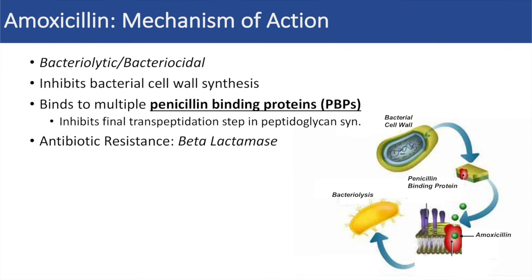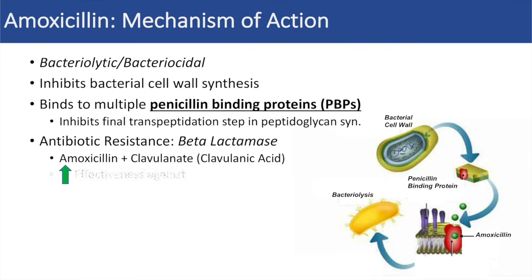Now, one of the major problems with the beta-lactam antibiotics is the development of antibiotic resistance. Bacteria have developed an enzyme known as beta-lactamase, which can actually break down the antibiotic — it'll break down the beta-lactam ring of the antibiotic, making it ineffective. We can get around this by supplementing the antibiotic with another agent. In this case, we utilize clavulanate or clavulanic acid and mix this with amoxicillin — you might have heard of amoxiclav. This increases effectiveness against a variety of other bacteria, including methicillin-sensitive Staphylococcus aureus (MSSA), not MRSA.